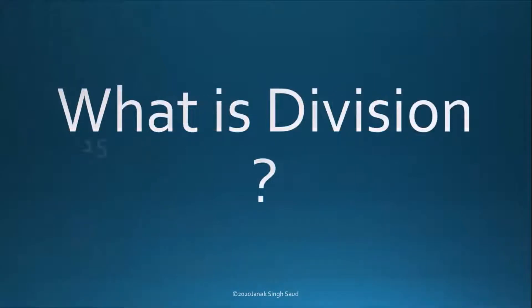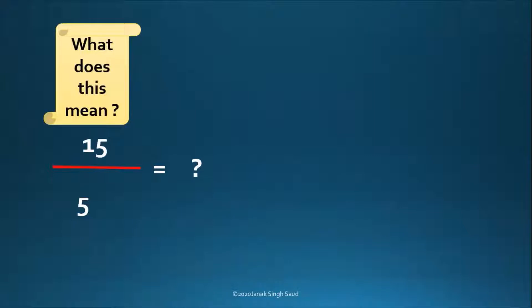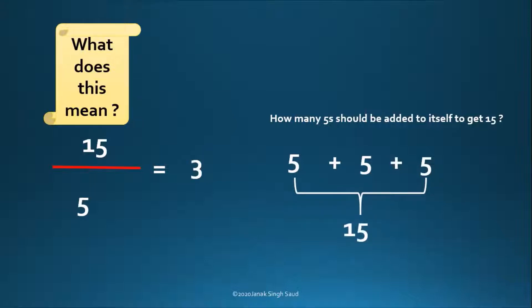So we have 15 by 5. What does this actually mean? It means how many 5s are required to make a 15, or how many 5s should be added to itself to get 15? It means 5 plus 5 plus 5 — three 5s are required to get 15. So the answer is 3.